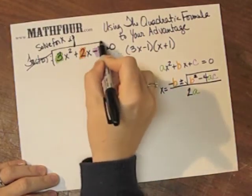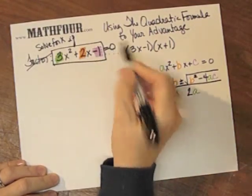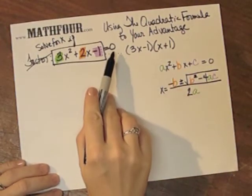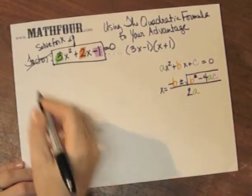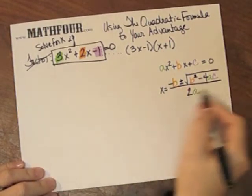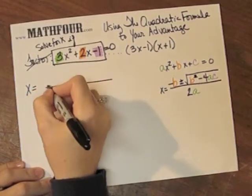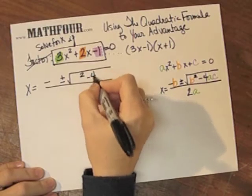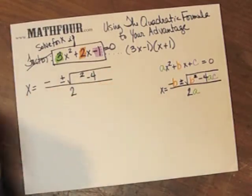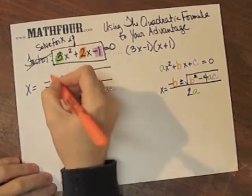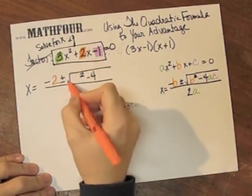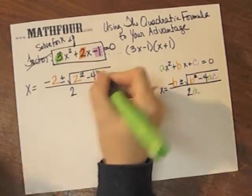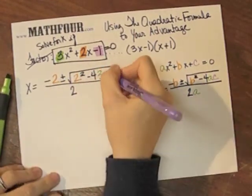This was my original problem, and I'm adding 'equals 0' so I can apply the formula — this is just a tactic to reach the end goal. So using this formula, I'm going to plug in: b is 2, plus or minus the square root of b squared minus 4 times a, which is 3, times c, which is negative 1.